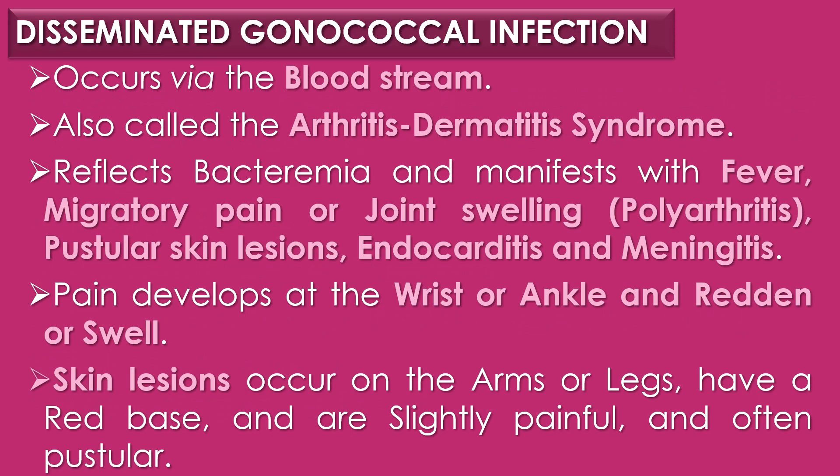The second clinical disease caused by Neisseria gonorrhoeae is disseminated gonococcal infection. Disseminated gonococcal infection occurs via the bloodstream and is also called arthritis-dermatitis syndrome. It reflects bacteremia and typically manifests with fever, migratory pain or joint swelling or polyarthritis, pustular skin lesions, endocarditis, and meningitis.